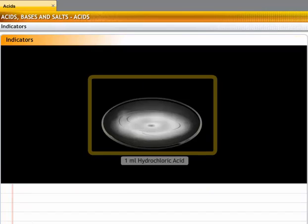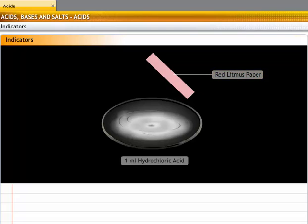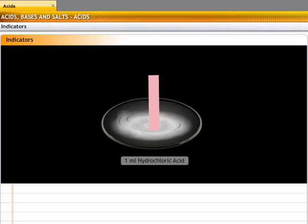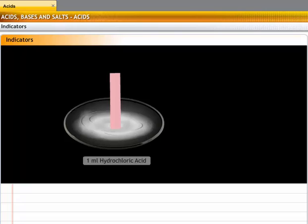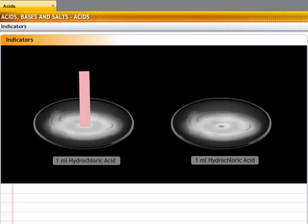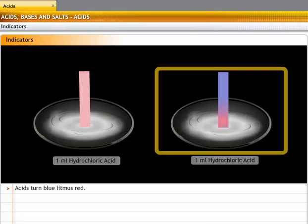Take 1 ml of any acid and put it into a watch glass, then place a red litmus paper in it. There is no change. In the same setup, place a blue litmus paper and see what happens. The litmus paper will turn red, indicating the presence of acid. This shows that acids turn blue litmus red.